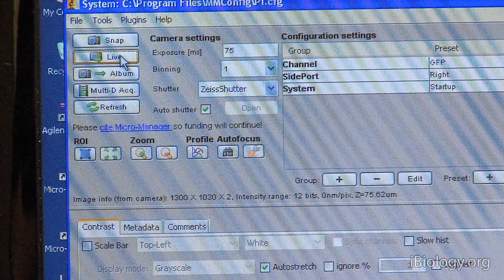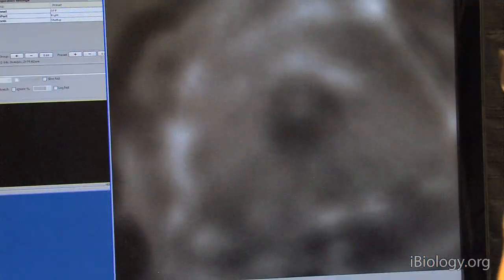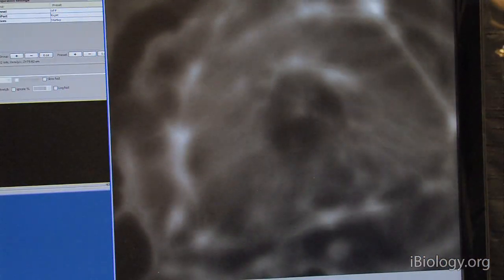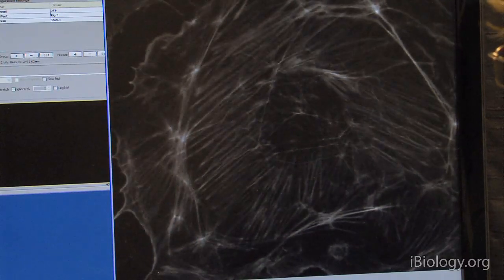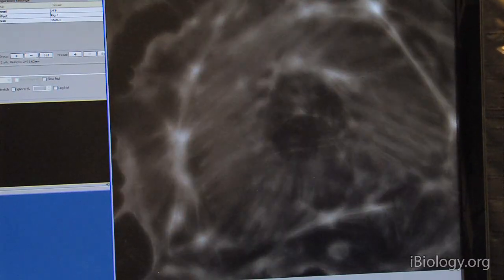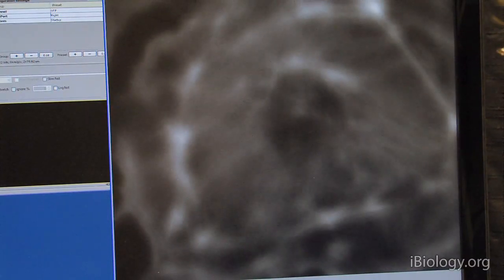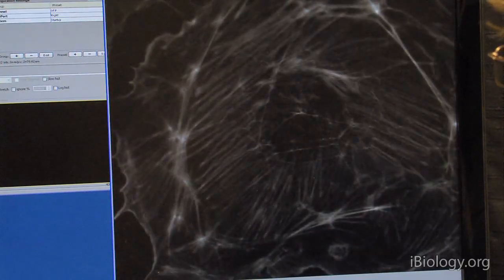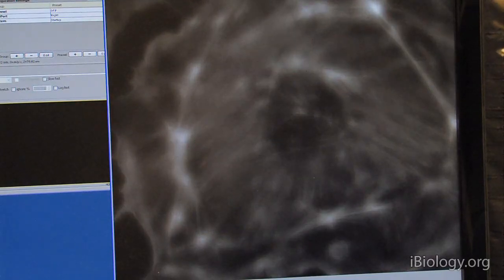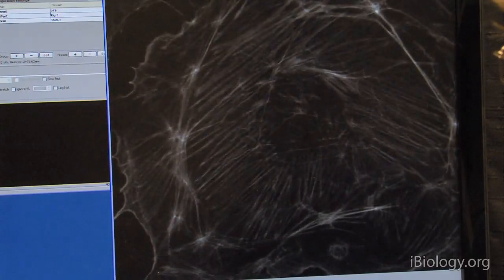A couple of other important things. We want to have a live image. So, when I press live, we get now a live feed from the camera, and that's, for instance, useful when you're focusing. I'm now moving the focus dial on the microscope. And so, this way, I can focus exactly where I want.